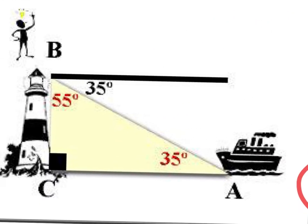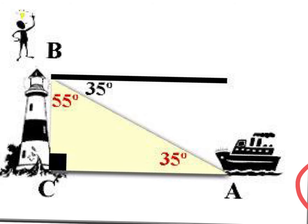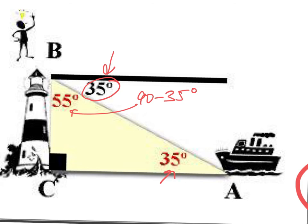Notice here — if they tell you that the angle of depression is 35 degrees, that's on the outside of the triangle. You can either say 90 minus 35 and get 55 degrees here, or you can place the 35 degree depression on the inside of the triangle at the bottom and call it the angle of elevation. Either way — and I'll do some problems both ways so you guys can see — either way it'll work.